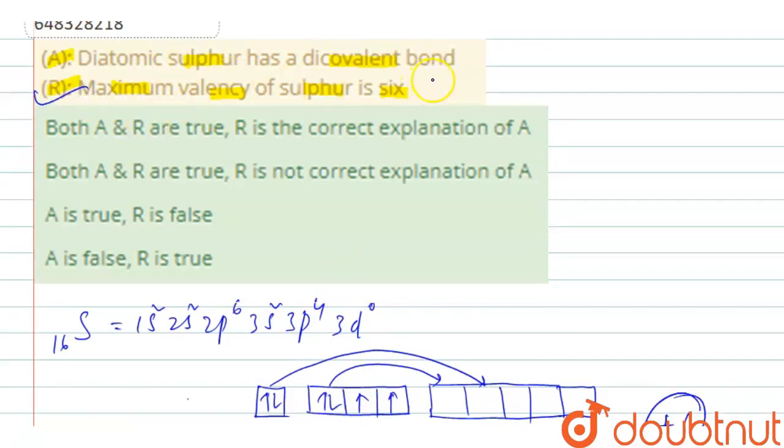Then, diatomic sulfur has a dicovalent bond. Diatomic sulfur, if we see like oxygen, sulfur is having ns², np⁴ configuration. So, ns², that is here 3s², 3p⁴ configuration.